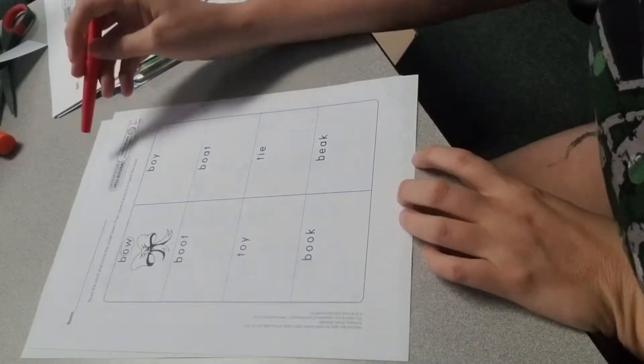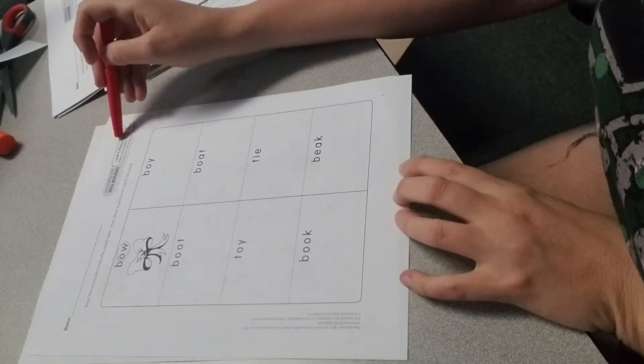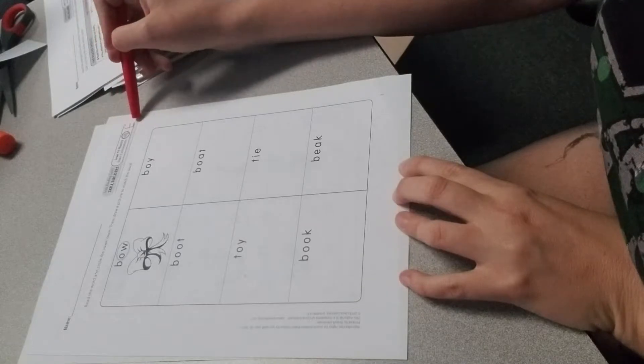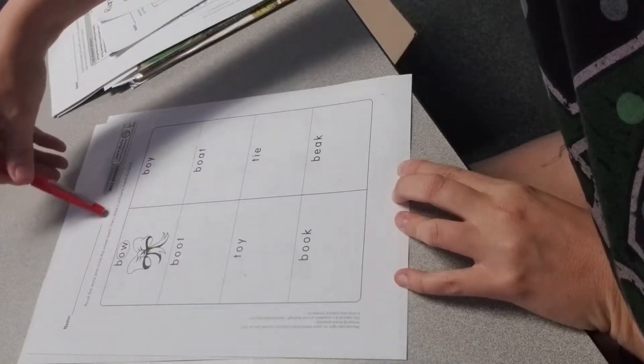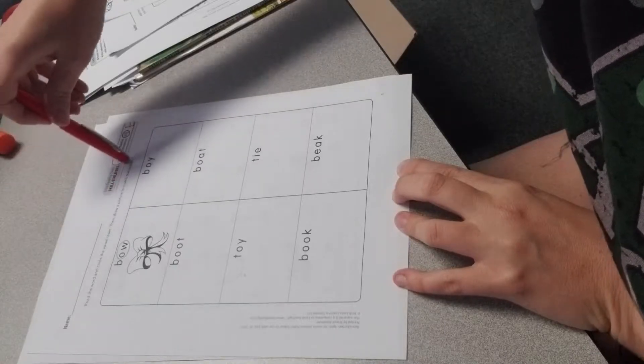All right scholars, this is Alexia Level 9 Phonics Vowel Combinations Sheet E. We're going to read the word and circle the vowel team. Then you're going to draw a picture to match the word.